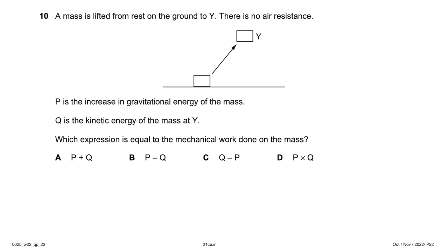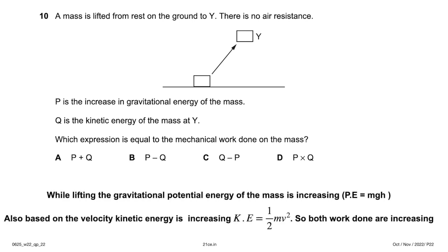A mass is lifted from rest on the ground to height y with no air resistance. P is the increase in gravitational potential energy; Q is the kinetic energy at y. The total mechanical work done equals the increase in potential energy plus the kinetic energy gained, so the answer is P + Q. Option A is correct.